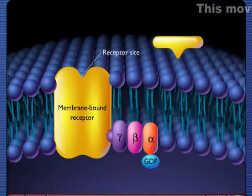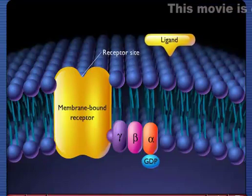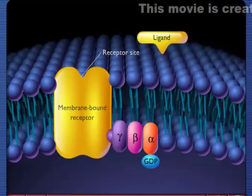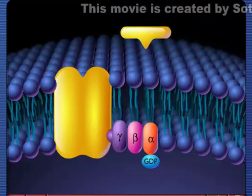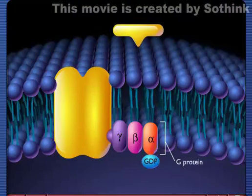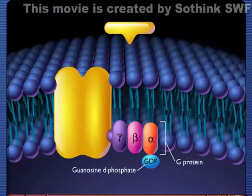As a receptor site for a small molecule called a ligand exposed on the outside of the cell, the portion of the receptor on the inside of the cell can bind to the G protein, which has a guanosine diphosphate attached to its alpha subunit.